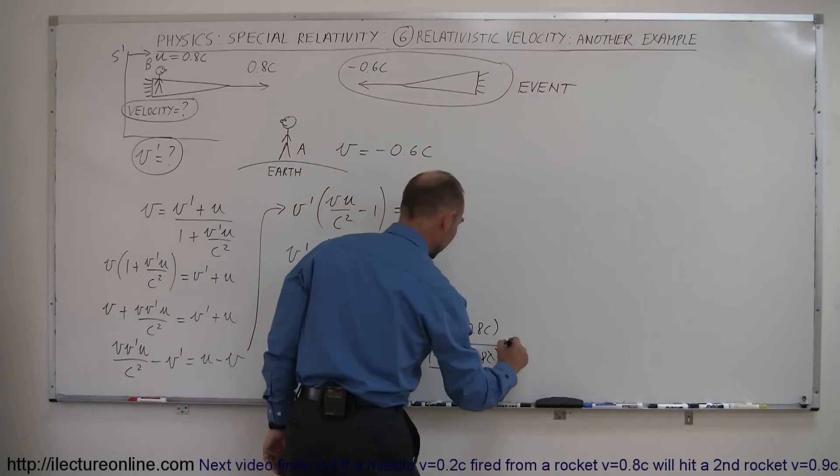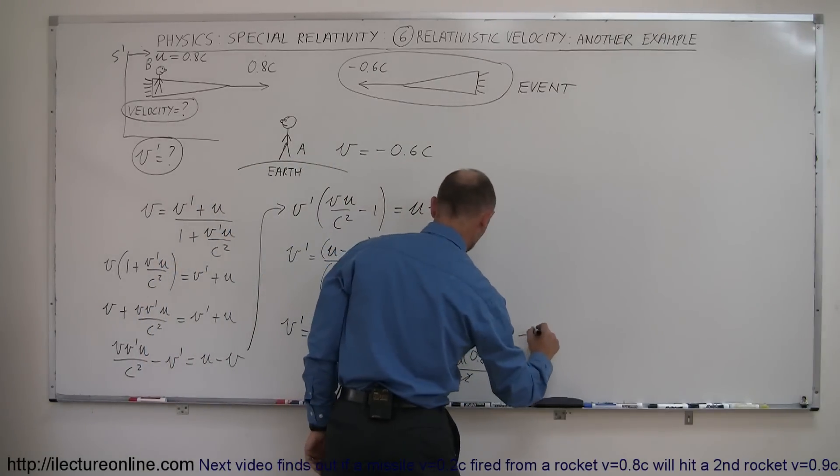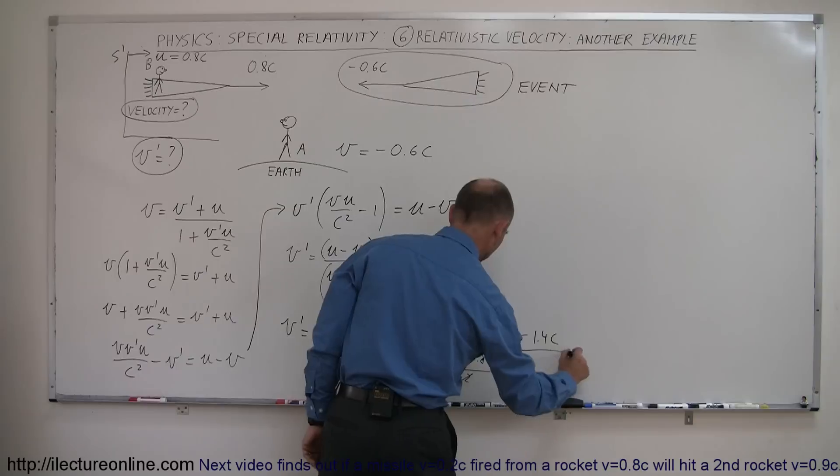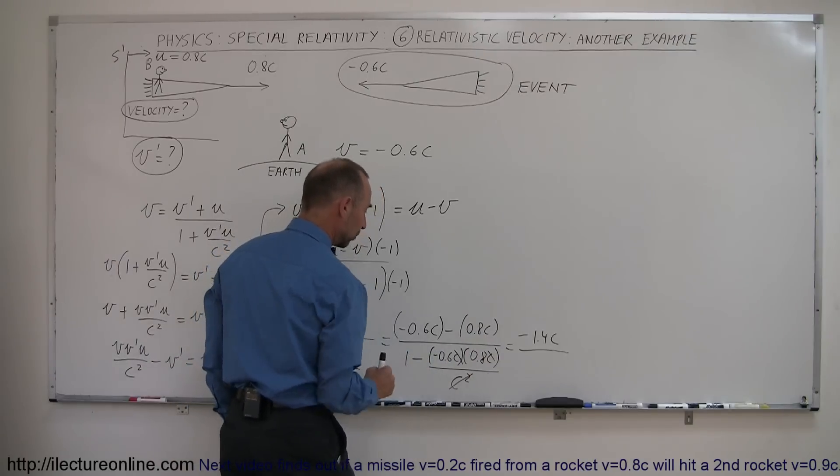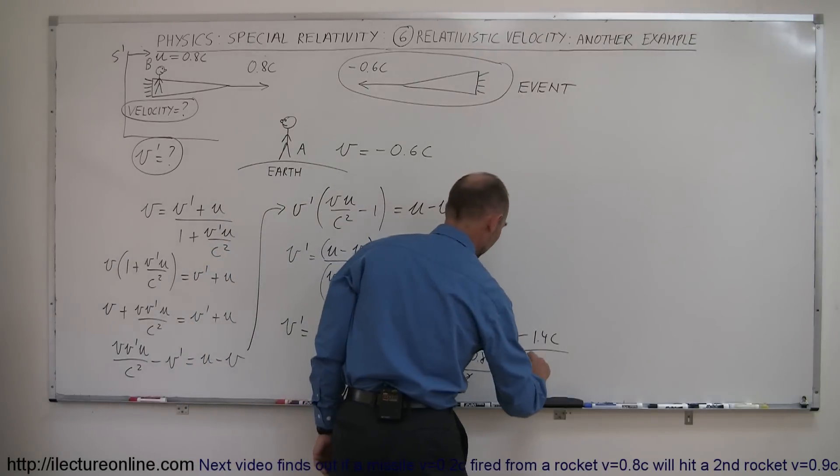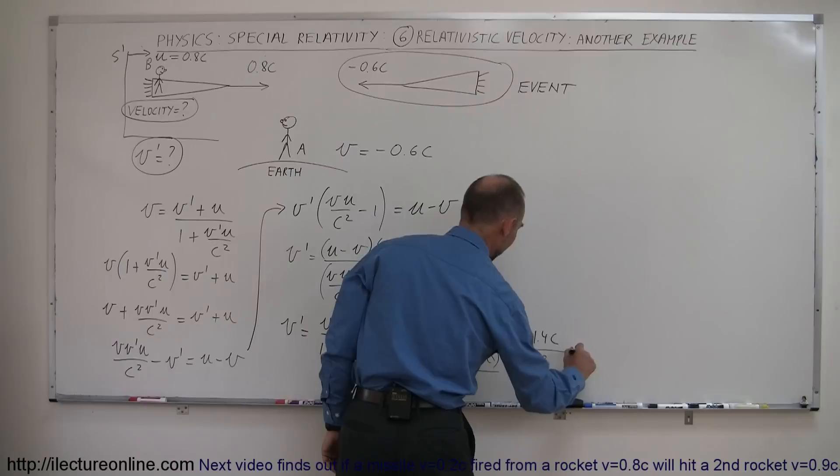Then we combine the numerator, and that would be minus 1.4c divided by the denominator. And this negative will cancel out that negative. So 0.6 times 0.8 is 0.48, plus 1 is 1.48.